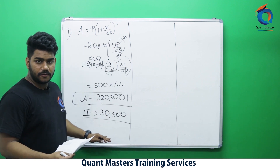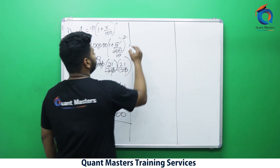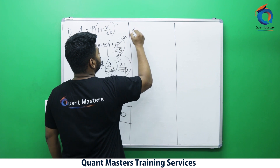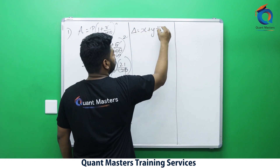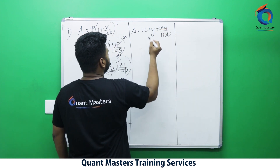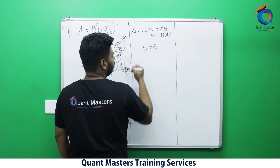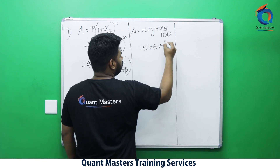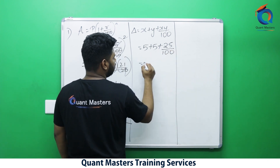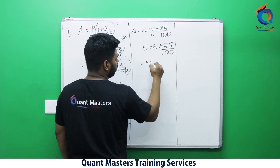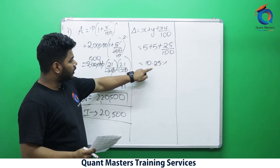Method two: for two years, the change in percentage formula is x + y + (xy/100). Here x = 5% and y = 5% per annum. So: 5 + 5 + (5×5)/100 = 10 + 0.25 = 10.25%.